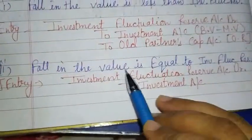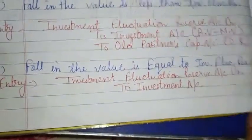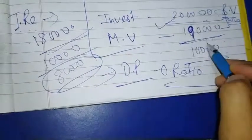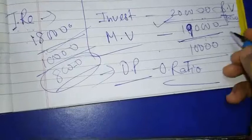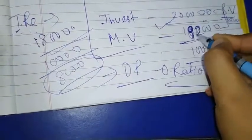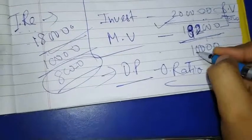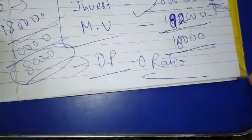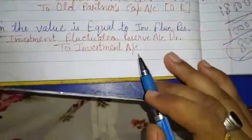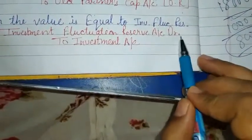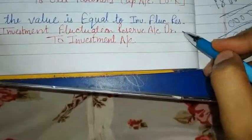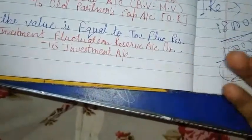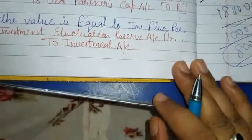The second condition under Case 2 is when the fall in value is equal to the Investment Fluctuation Reserve. For example, if the reserve has 18,000 and the investment dropped from 2,00,000 to 1,82,000 - a fall of exactly 18,000 - then in this condition nothing remains to distribute to partners. The entry will be: Investment Fluctuation Reserve Account debit to Investment Account, because both amounts are equal and no balance remains.